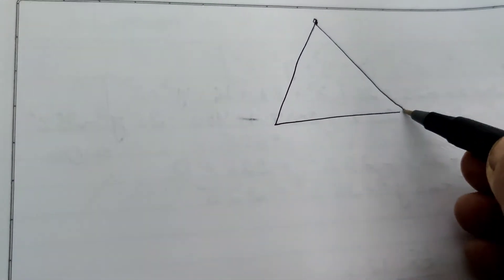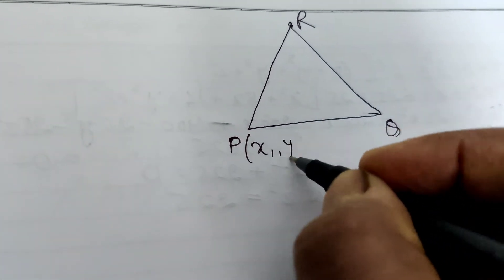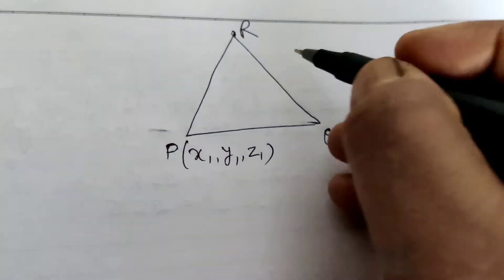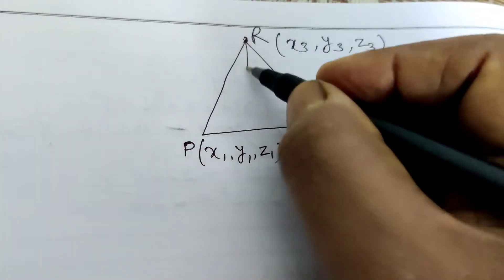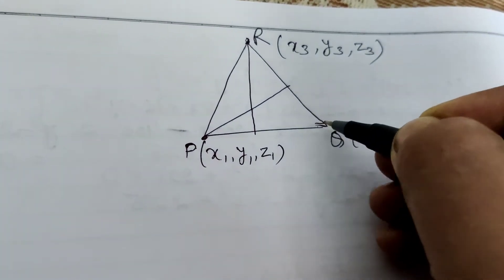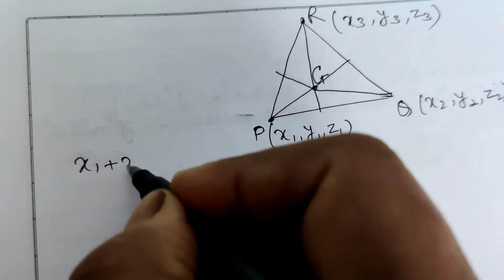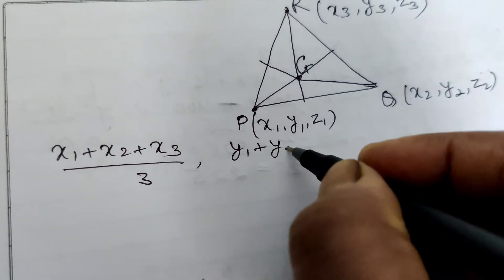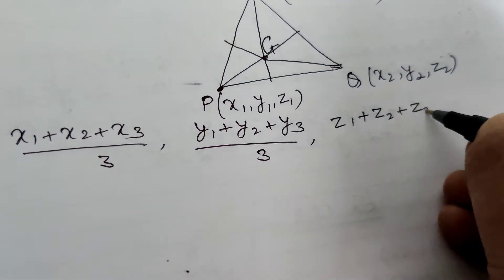Next, the coordinates of the centroid. The centroid is a point in a triangle with vertices P, Q, R having coordinates (x1, y1, z1), (x2, y2, z2), and (x3, y3, z3) respectively. The centroid is the point of concurrence of all the medians, which divide in the 2 to 1 ratio. The coordinates of the centroid are: (x1 + x2 + x3) / 3, (y1 + y2 + y3) / 3, and (z1 + z2 + z3) / 3.